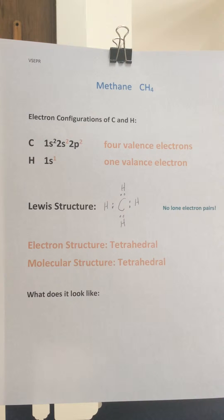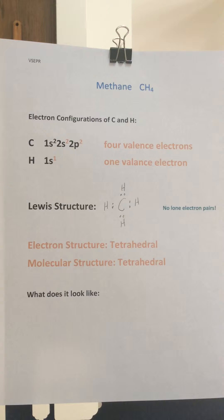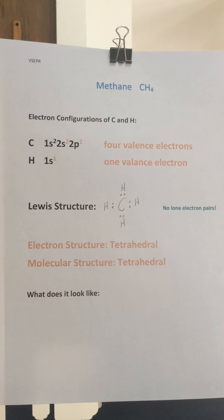Now let's talk about the electron structure and then the molecular structure. The whole deal with valence electron pair repulsion is that those bonds like to get as far away from each other as possible, because they're made of electrons and they repel each other. So they arrange themselves around the central atom in a geometry that maximizes the distance away from each other.